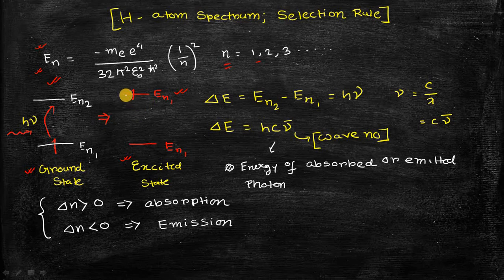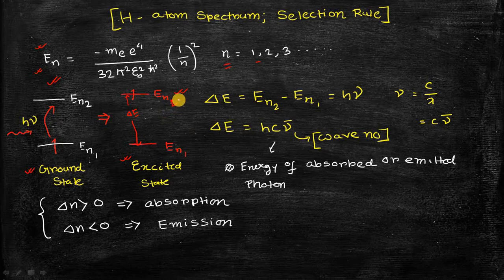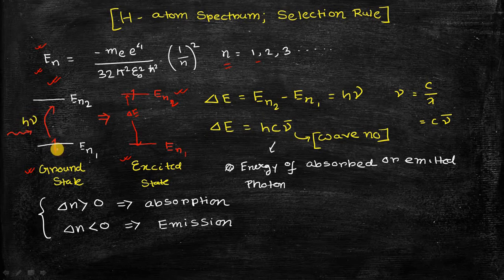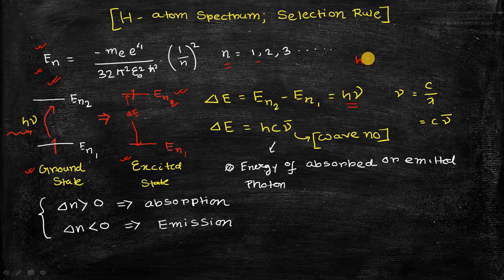There is an energy gap delta E, which is the energy difference between the n1 state and n2 state. This energy gap is equal to the energy of the n2 state minus the energy of the n1 state. The h·nu amount of energy supplied is absorbed by the electron as it goes to the higher energy state, so En2 minus En1 equals h·nu, where h is Planck's constant.